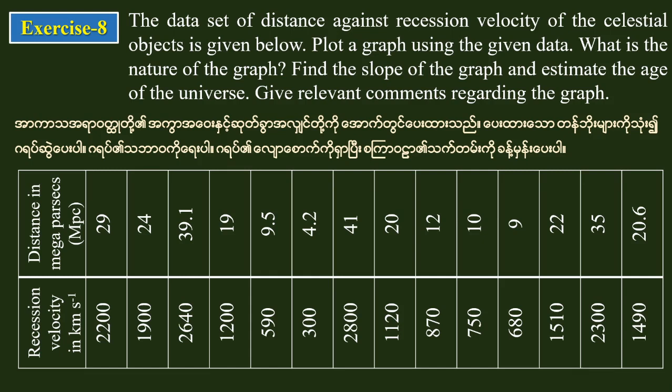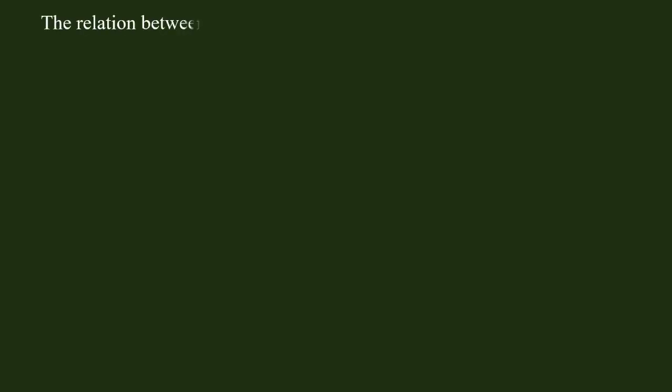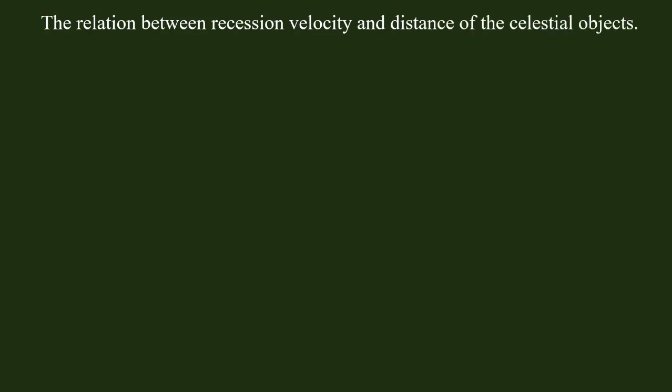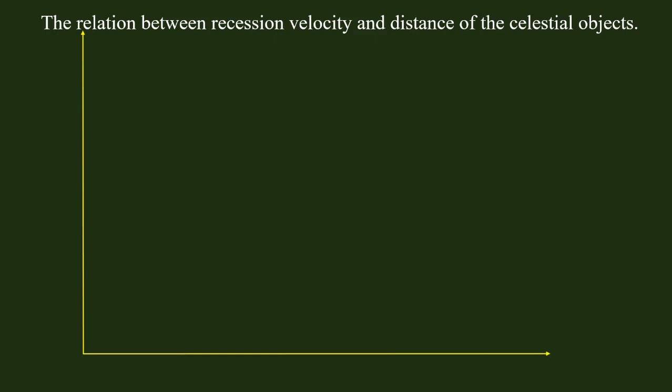There is a linear relationship between recession velocity and the distance of the celestial objects. The graph is plotted with distance on the x-axis and recession velocity on the y-axis.